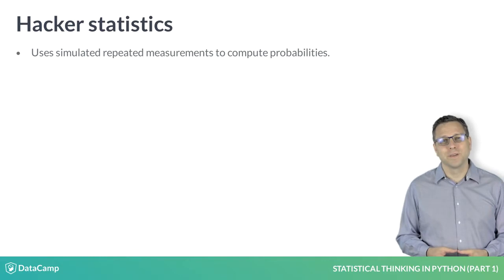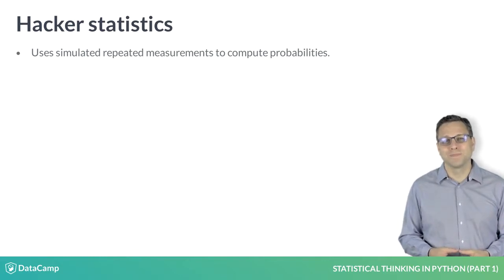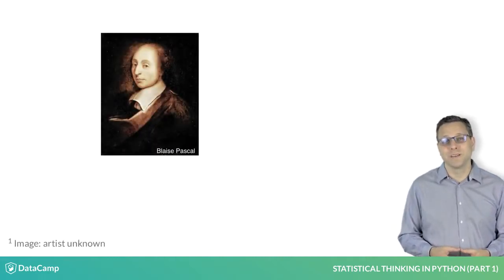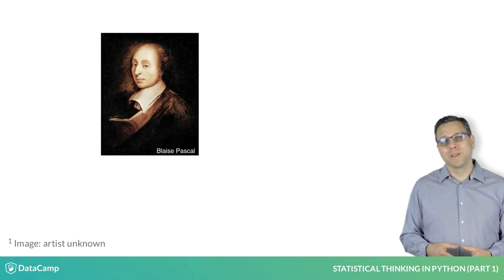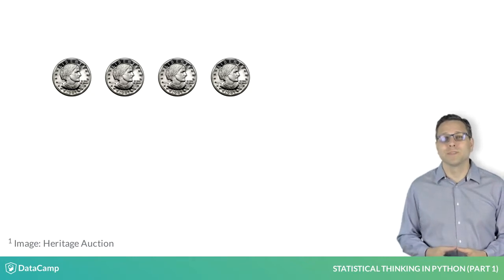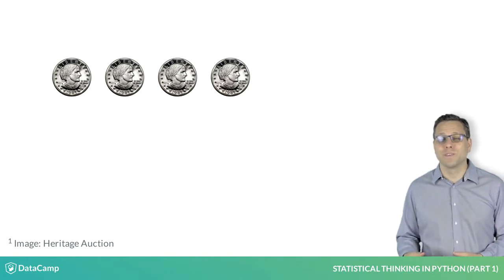For our first simulation, we will take a cue from our forebears. The concepts of probability originated from studies of games of chance by Pascal and others in the 17th century, so we will simulate coin flips. Specifically, we will simulate the outcome of four successive coin flips. Our goal is to compute the probability that we will get four heads out of four flips.